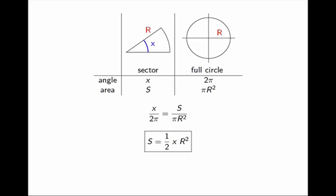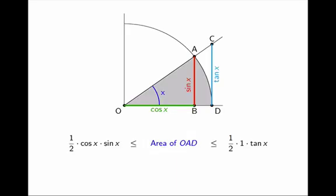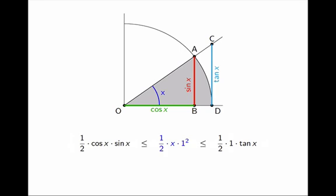So let's use this formula back in our previous problem. I was trying to calculate the area of this sector. In this case, the angle is x, and the radius is 1. So the area of the sector is simply 1/2 of x.